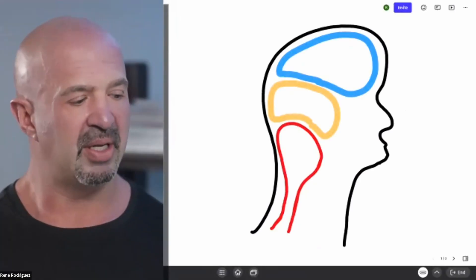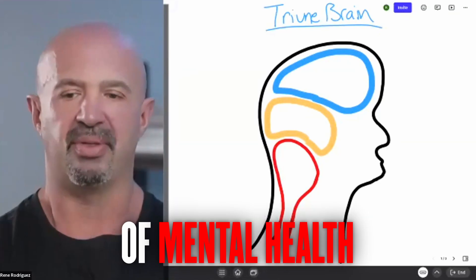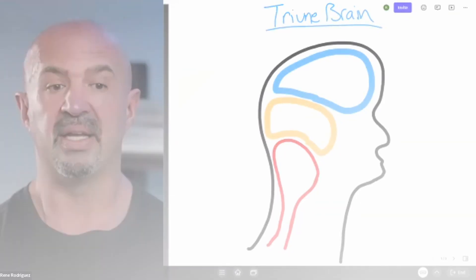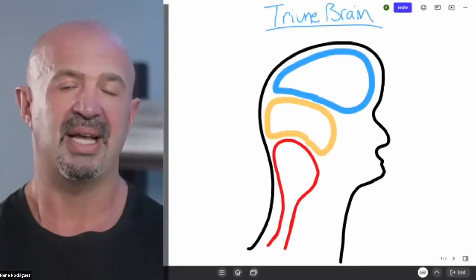What I'm going to run through is this theory called the triune brain theory, developed by Dr. Paul McLean. He was a director of the National Institute of Mental Health. What he was saying was that we had three different brain systems.